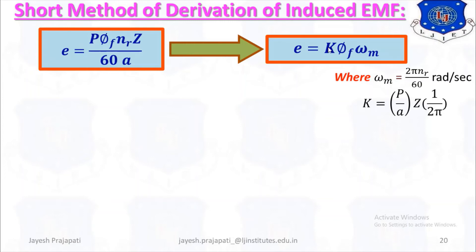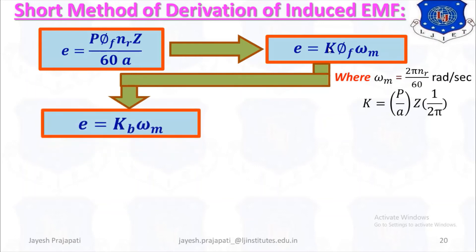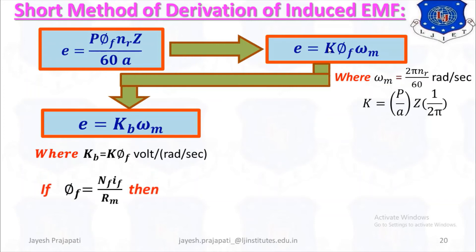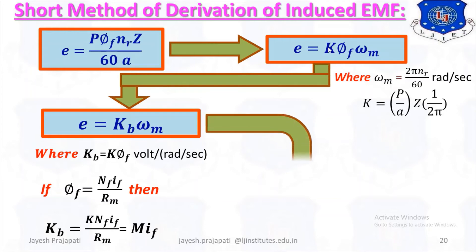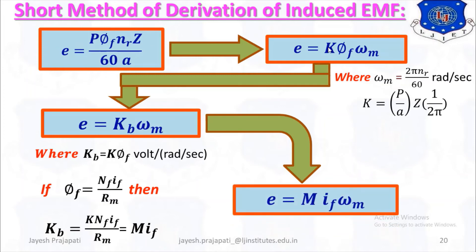Then K·Φf·ωm is replaced by KB·ωm, where KB is the back EMF constant equal to K·Φf in volts per radian per second. Substituting Φf equals NF·IF divided by RM, we get KB equals M·IF, and finally E equals M·IF·ωm. This gives four EMF equations for modeling a DC machine.